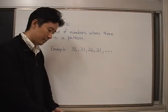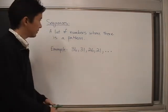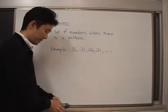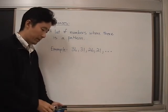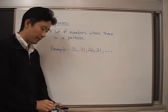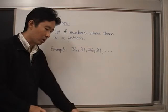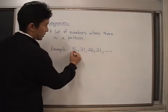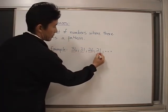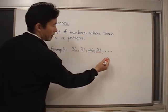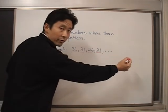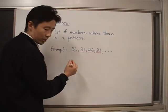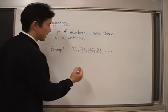Now, in addition to wanting to really be able to distinguish and define what a sequence is, we also want to be able to talk about what these numbers are called. This number here, this number here, this number here, and all of the numbers which follow in the same pattern are called terms of the sequence.